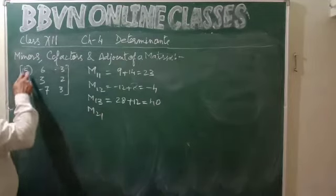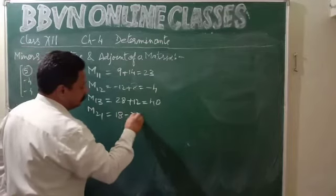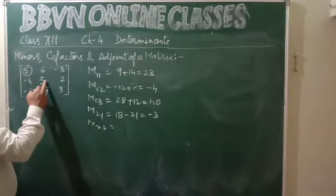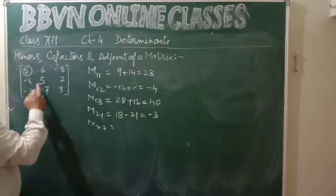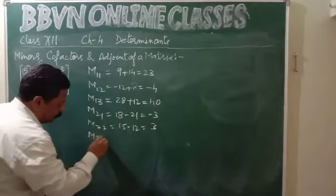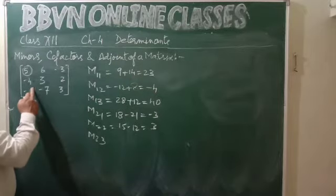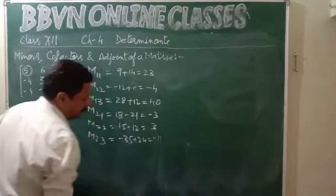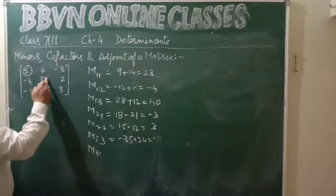Leave this row and this column: 18 minus 21 gives minus 3, so M21 is minus 3. For M22, second row second column, we are finding the minor of element 3 — leave this row and this column: 15 minus 12, giving M22. For M23, second row and this column: minus 15, so M23 is minus 15. For M31, third row first column — leave this column and this row: 12 plus 9.